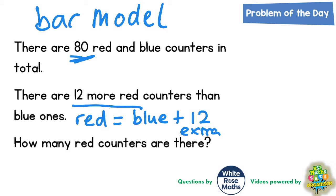Now that comes into play when we draw the bar model. We've got a section of the bar that will represent the blue counters and then we need a section to represent the red counters. The red counters is the same as the blue ones but with an extra 12 on the end.